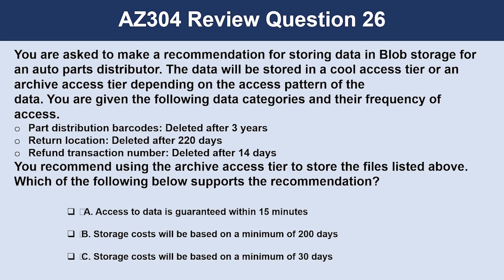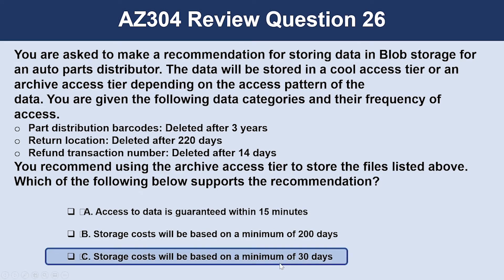Question number 26. You are asked to make a recommendation for storing data in Blob Storage for an auto parts distributor. The data will be stored in a cool access tier or an archive access tier depending on the access pattern. You are given data categories: part distribution barcodes deleted after 3 years, return location deleted after 220 days, and refund transaction number deleted after 14 days. You recommend using the archive access tier. The correct answer is that storage cost will be based on a minimum of 30 days. Data in the archive tier can take several hours to retrieve, and data must remain in the archive tier for at least 180 days or be subjected to an early deletion charge.